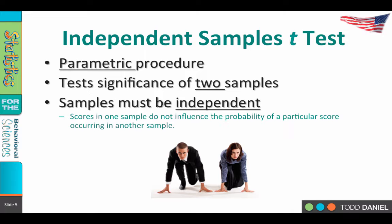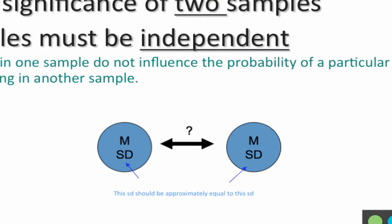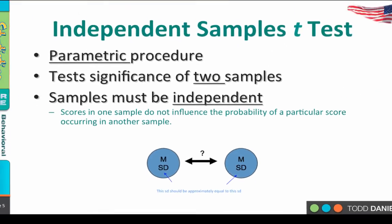If we're comparing men and women, we would have a mean and a standard deviation for each sample. We could calculate the mean and standard deviation for the men and compare it to the mean and standard deviation for the women. The t-test is testing whether the means of these two samples are different. However, the standard deviations of the two samples should be approximately equal, and we do have a way of testing that, because if that assumption is violated, we could have some problems.